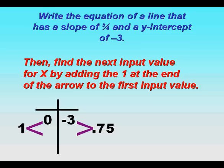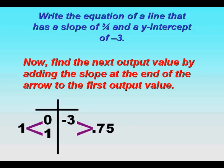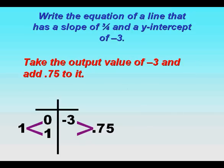Then we need to find the next input value for x by adding the one at the end of the arrow to the first input value. So zero plus one is one. And now we need to add the next output value by adding the slope at the end of the arrow to the first output value.